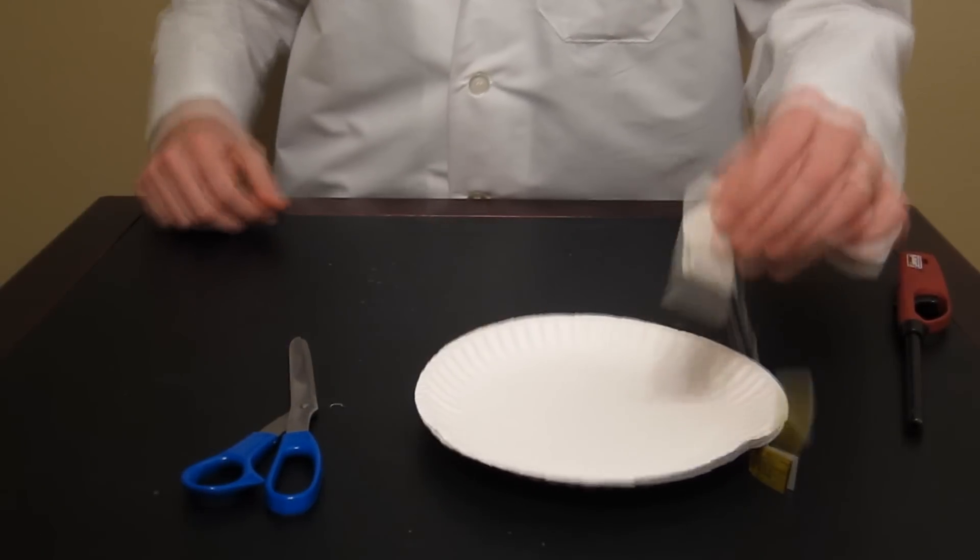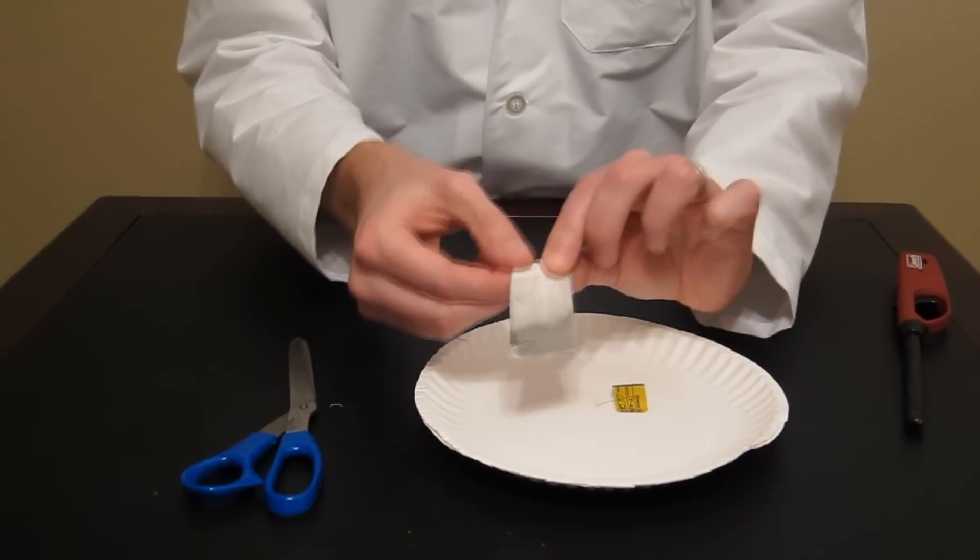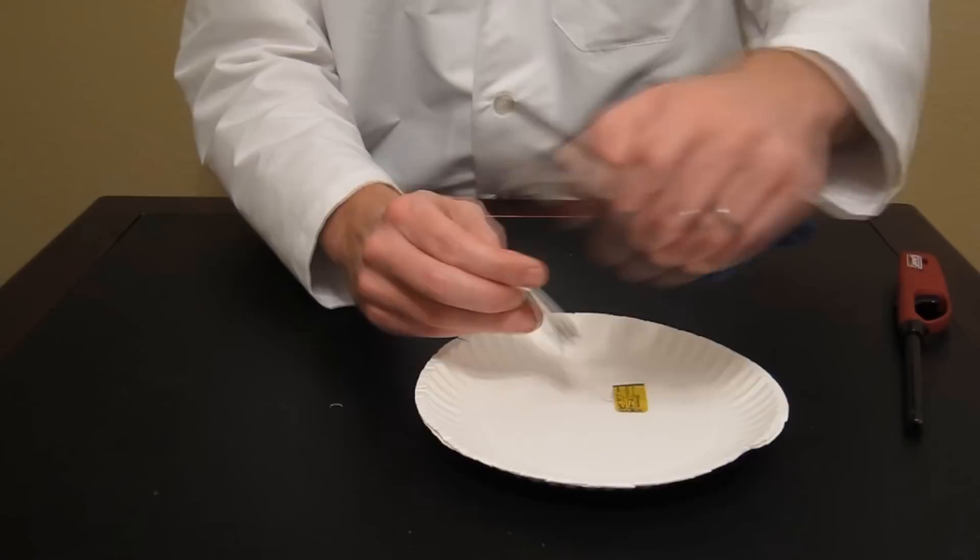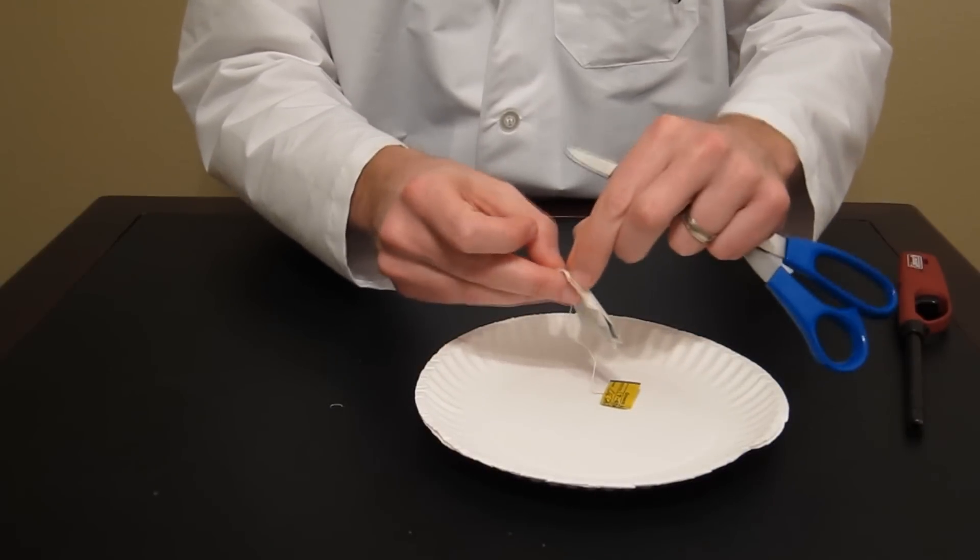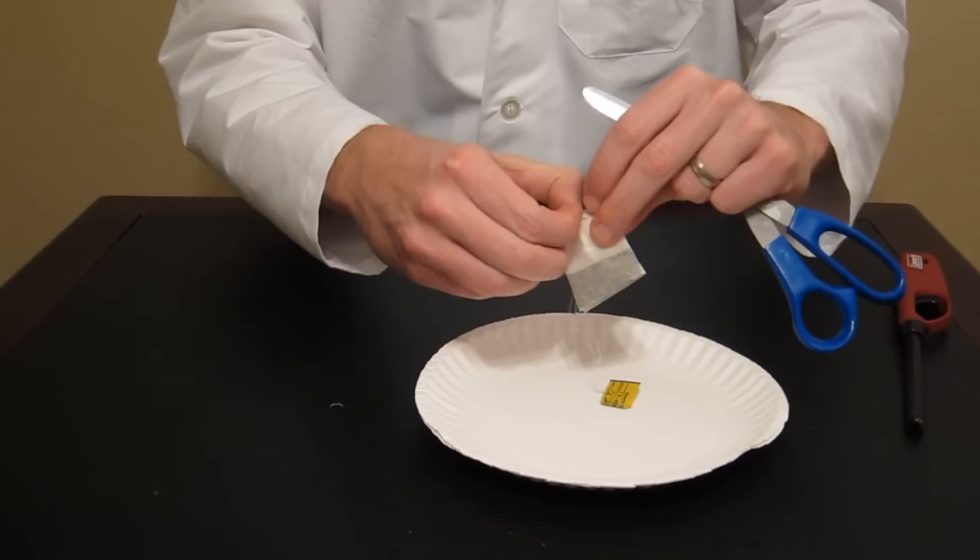Okay, the first thing we're going to need to do is take our teabag, take the package off of it, and we're going to want to remove this staple at the top that holds the tea in. This is where your scissors are going to come in handy. You kind of pry your scissors underneath that staple and just pull it out.